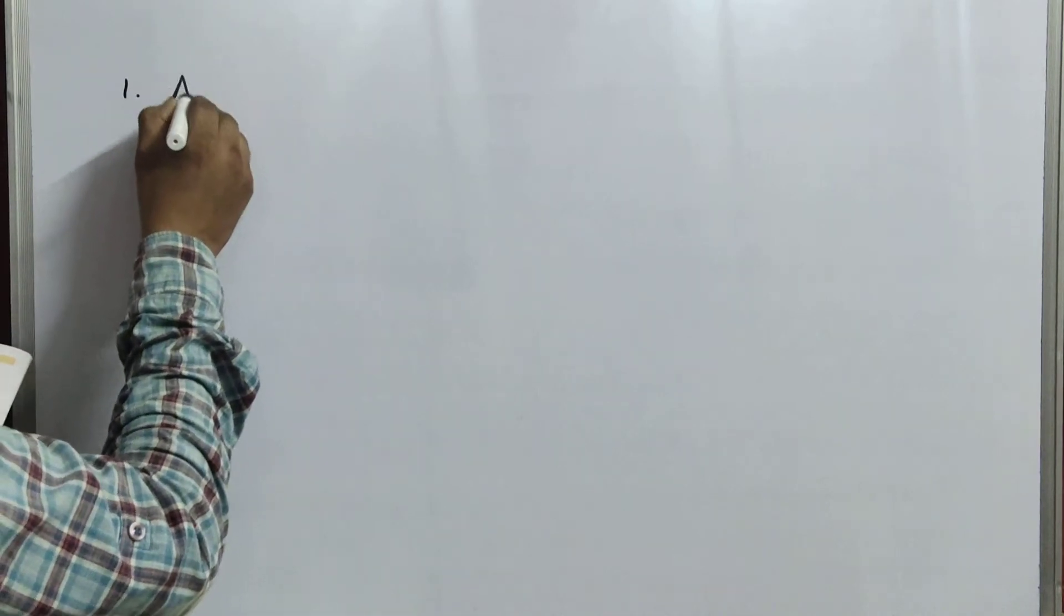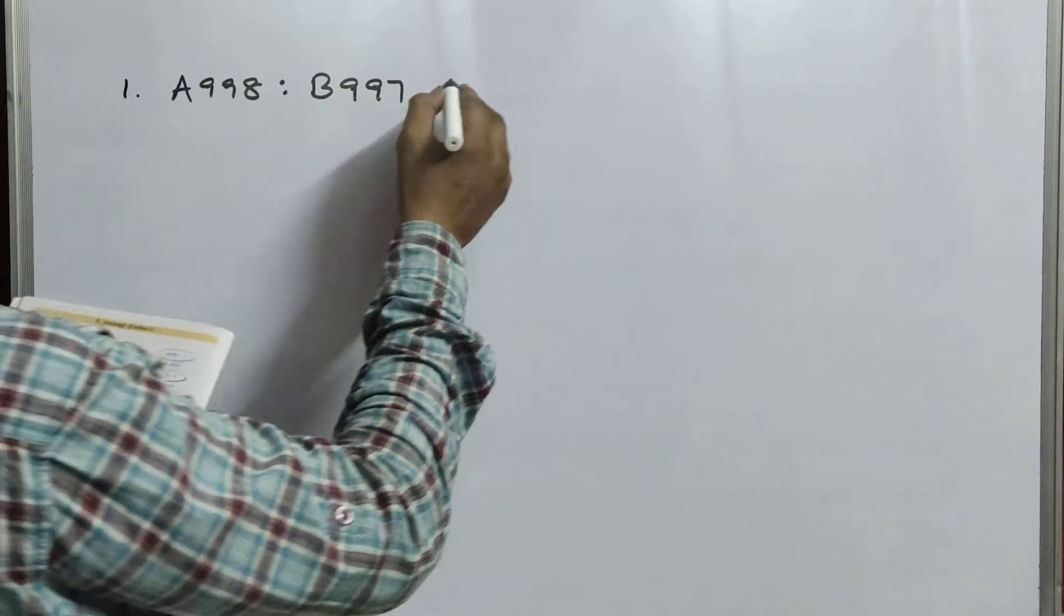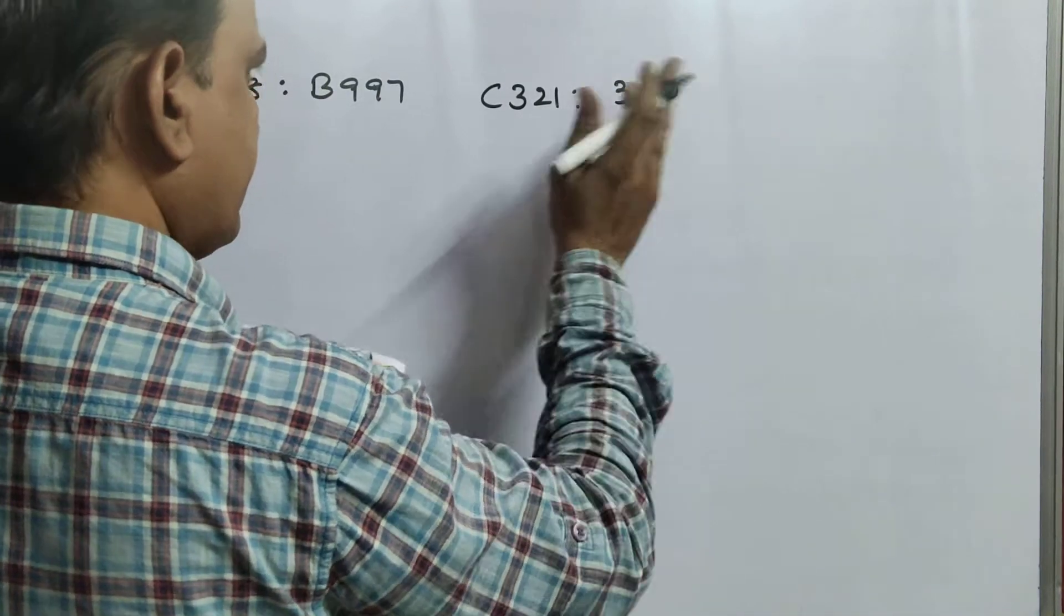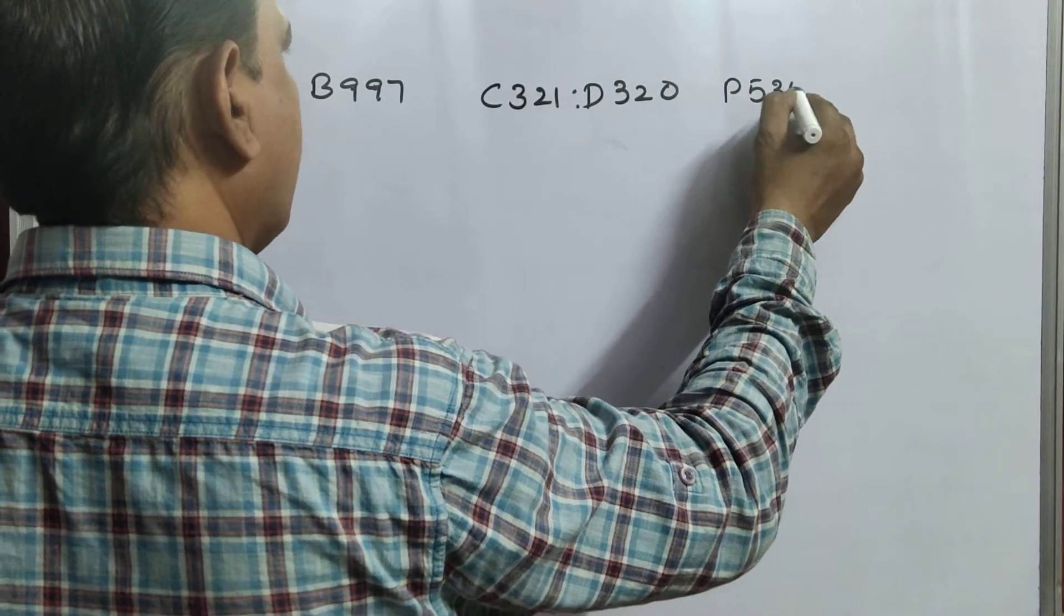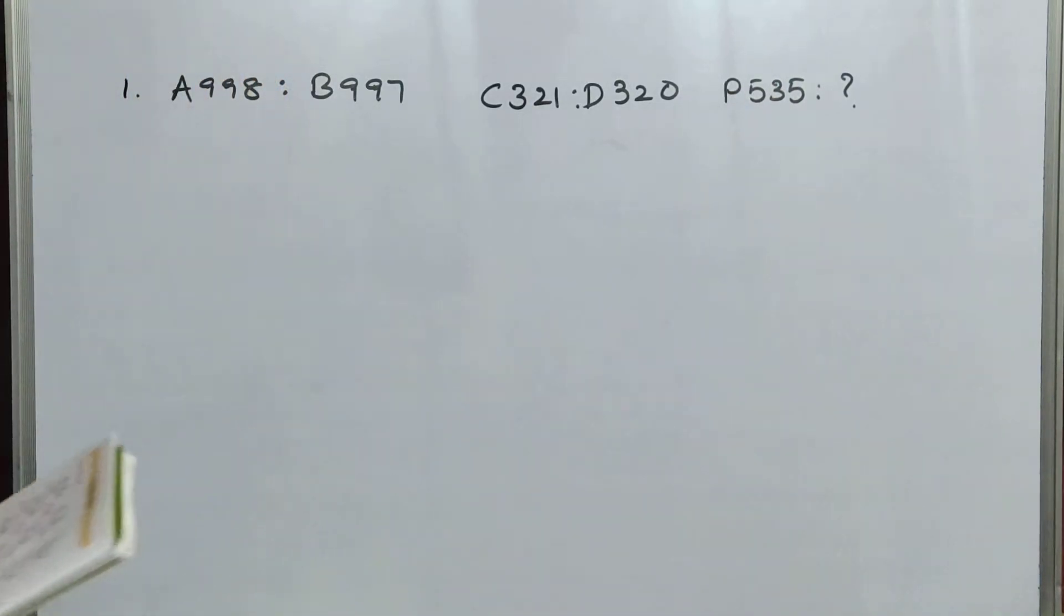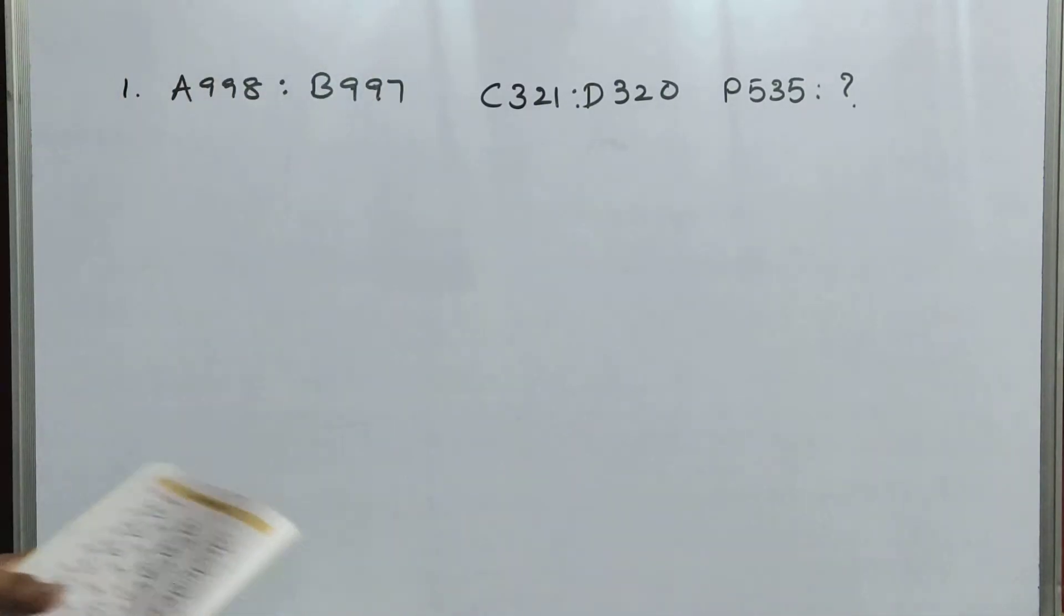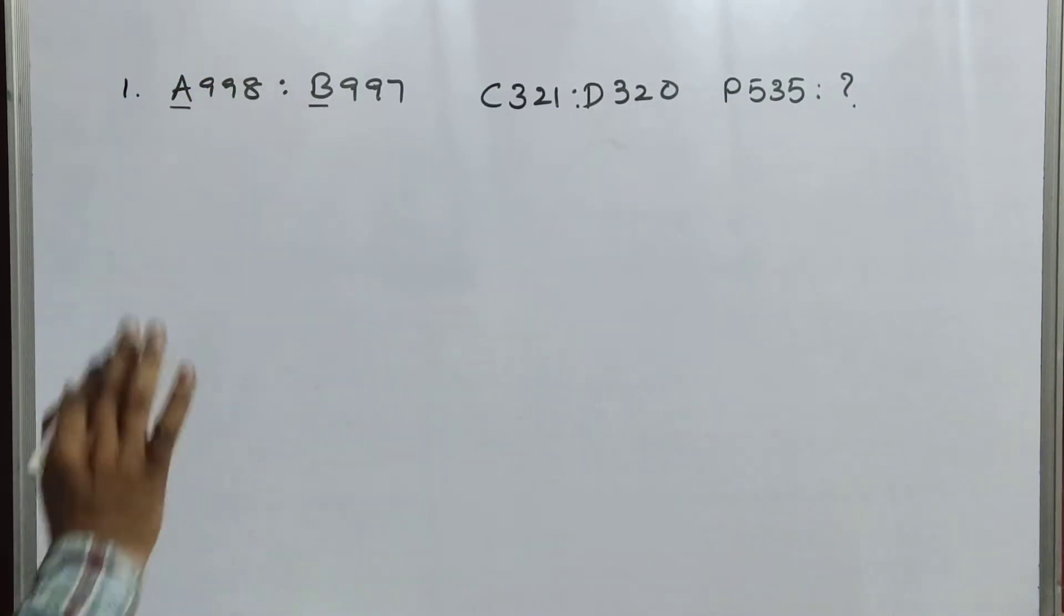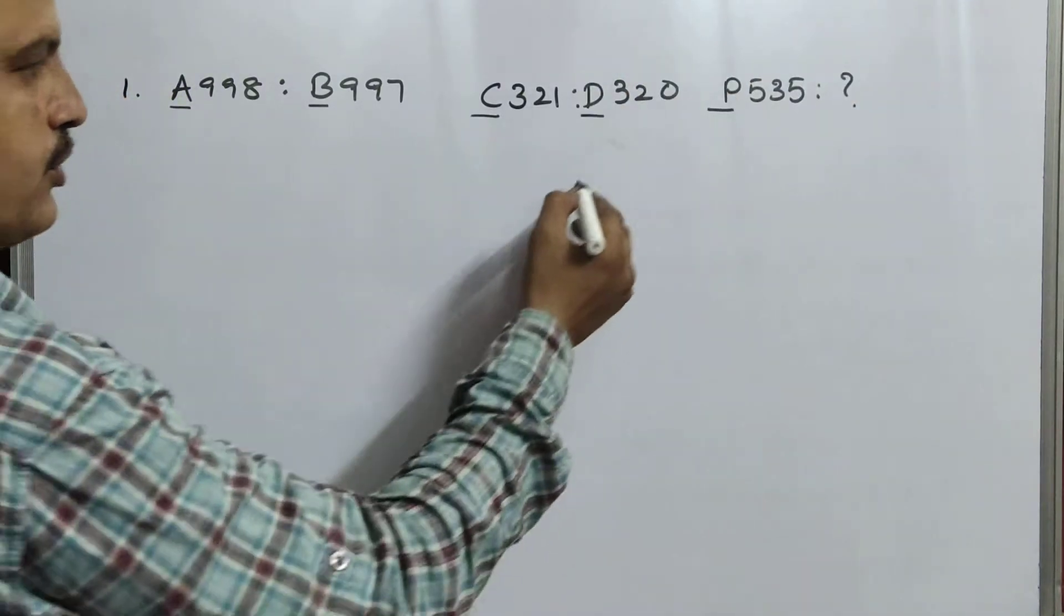The first question is A998 is to B997 and here C321 is to D320, and P535 is to question mark. The question is, take the right choice. First if you know the question, then you can easily find out the answer. So see here, A, B. That means, immediately after A letter B will come. And see here, C, D. And P, next alphabet word Q.